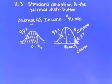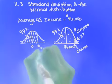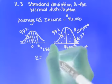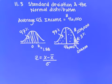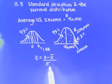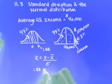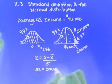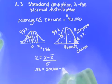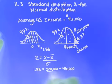So this z-score is 1.88. Now I'm going to use the formula z = (x - x̄)/σ. We're going to be solving for standard deviation. So I plug in the z-score: 1.88 = (200,000 - 46,000)/σ.